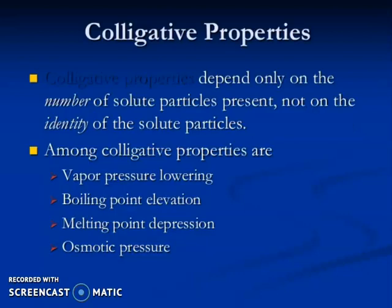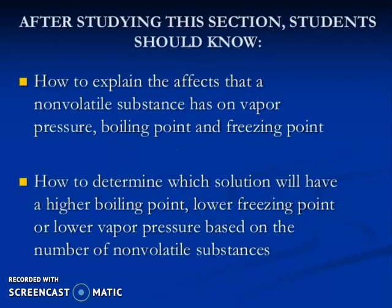Colligative properties depend only on the number of solute particles present, not on the identity of the solute particle. Among the colligative properties are vapor pressure lowering, boiling point elevation, melting point depression, and osmotic pressure. After studying these sections, you should know how to explain the effect that a non-volatile substance has on vapor pressure, boiling point, and freezing point, and how to determine which solution will have a higher boiling point, lower freezing point, or lower vapor pressure based on the number of non-volatile substances.